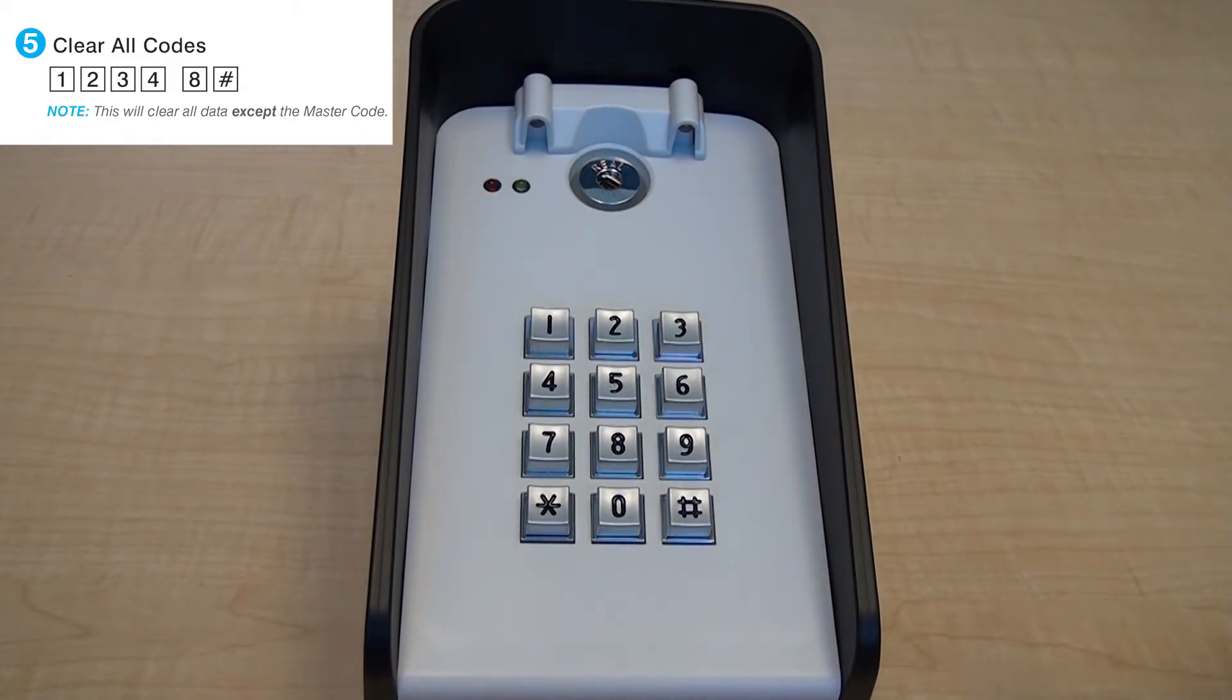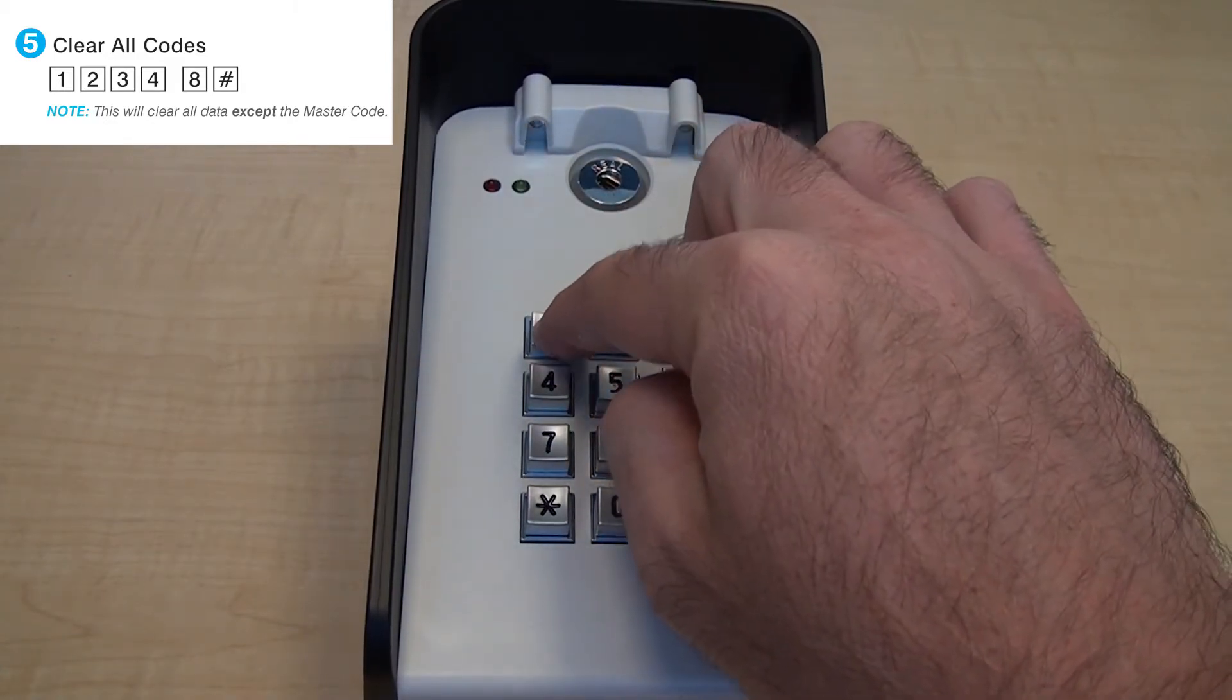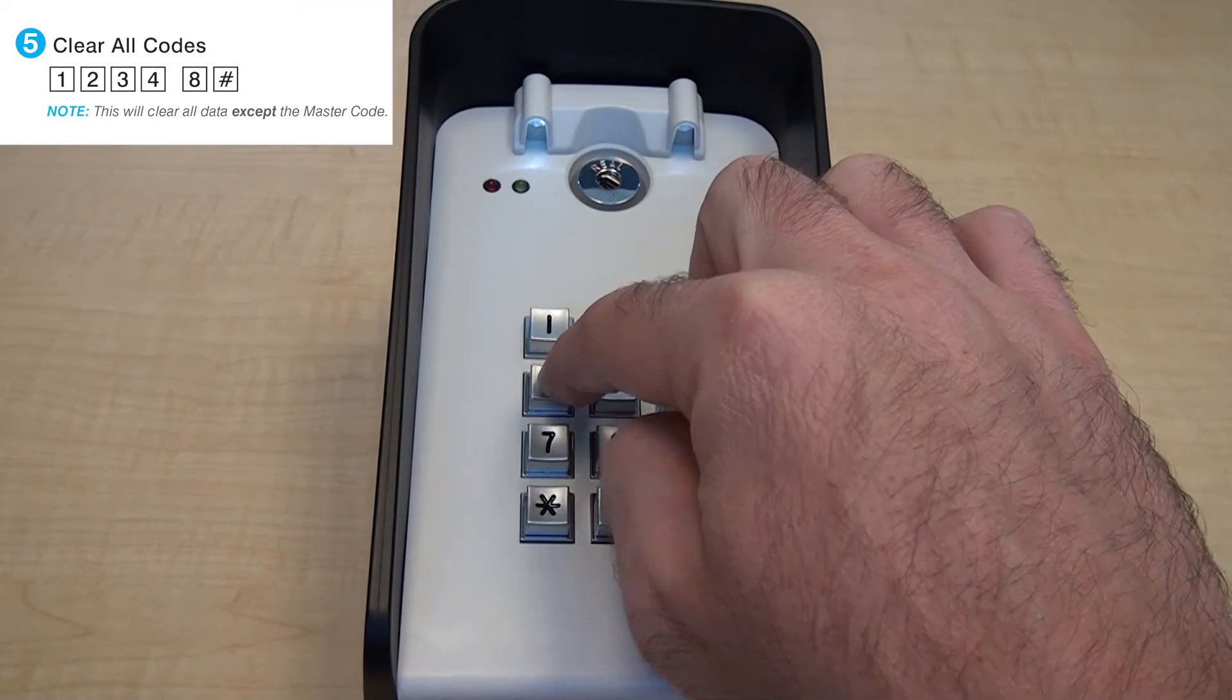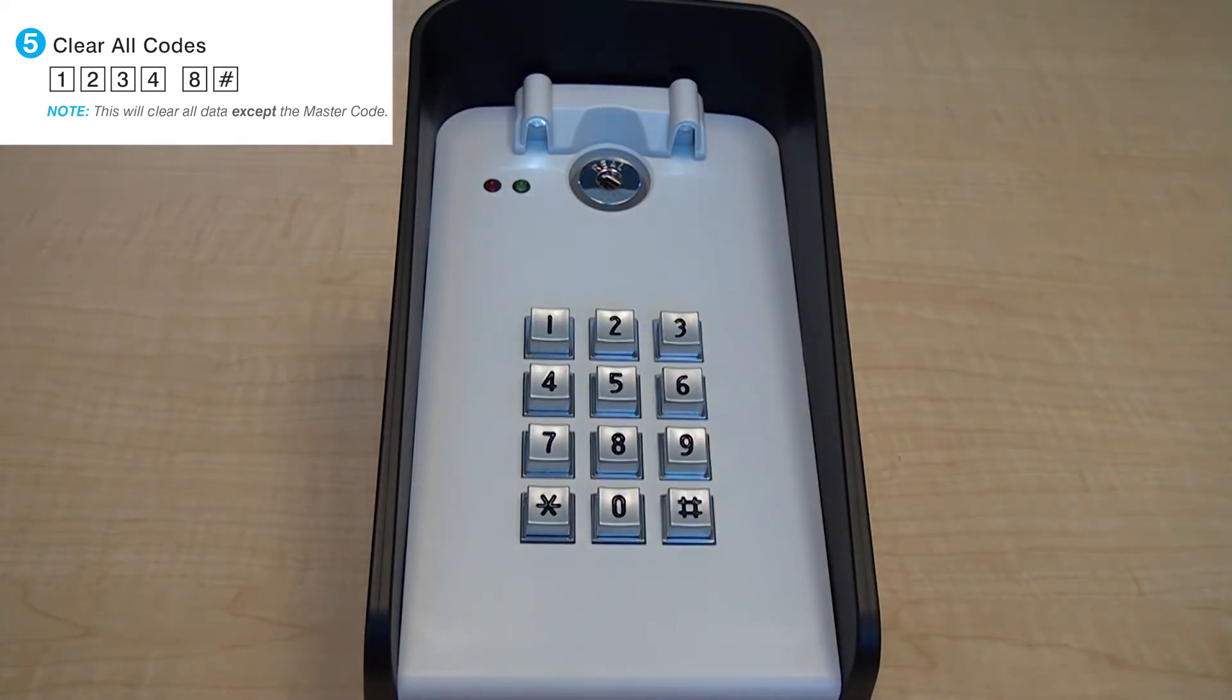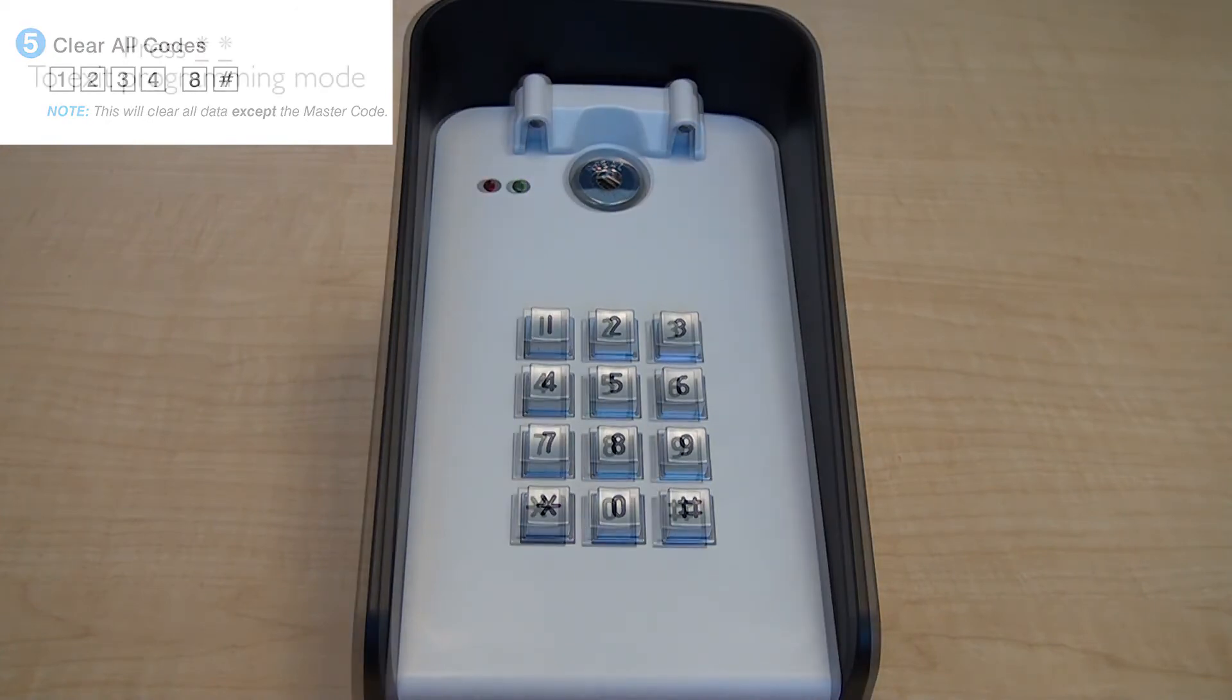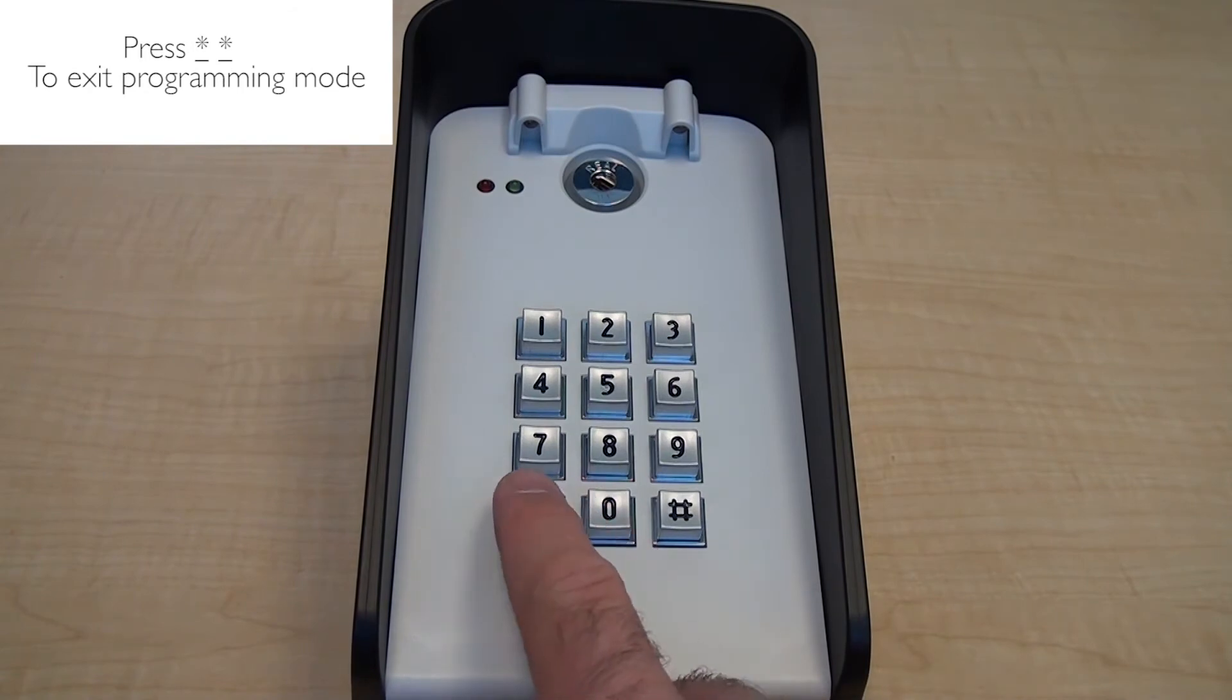To clear all codes in the keypad, first use the master code to enter programming mode. Press 8 pound to enter the clear all function of the keypad. This input will clear all codes with the exception of the master code. When finished, press the star button twice to exit programming mode.